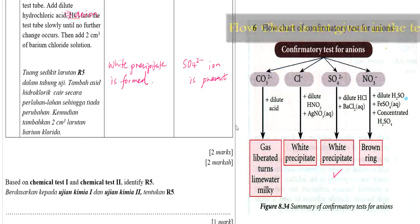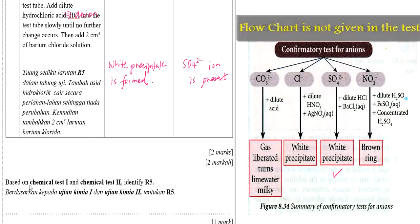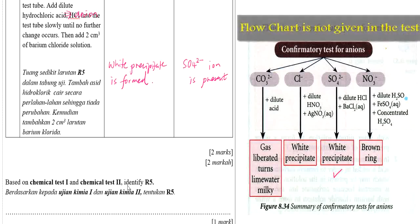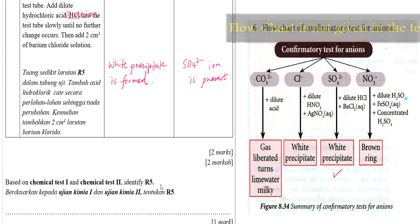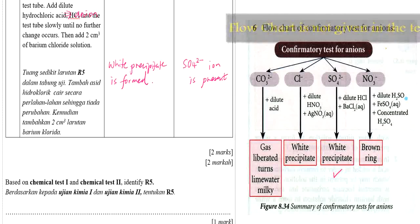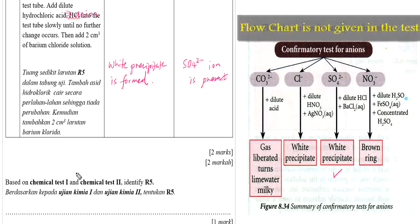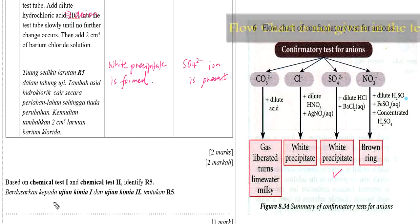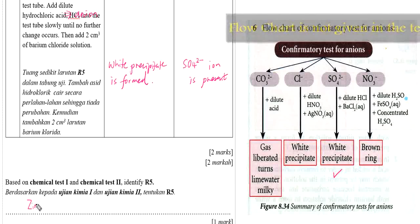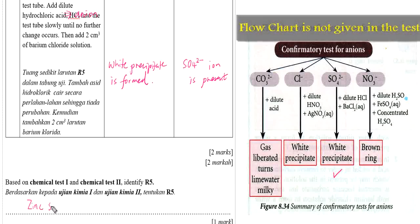Based on chemical test 1 and 2, we can identify the R5. We have identified that the cation is zinc and the anion is sulfate. Therefore, R5 is zinc sulfate.